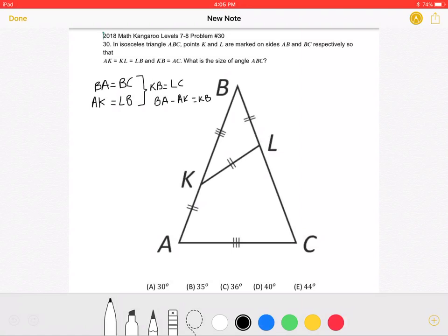The problem also states that AK is equal to LB. This means that KB must be equal to LC. This is because BA minus AK is equal to KB.